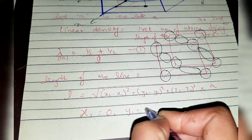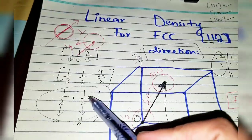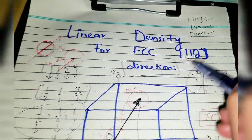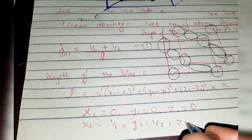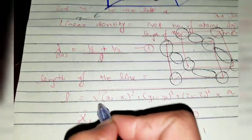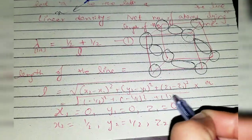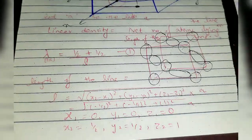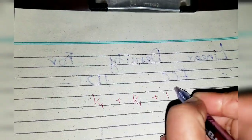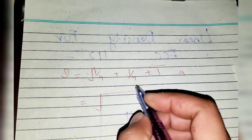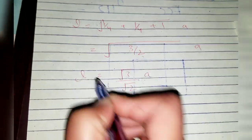The initial point is the origin: (0, 0, 0), and the final point is (1/2, 1/2, 1). Substituting into the distance formula: l = √[(1/2)² + (1/2)² + (1)²] × a = √[1/4 + 1/4 + 1] × a = √(3/2) × a = (√3 / √2) × a. This is the length of the line.